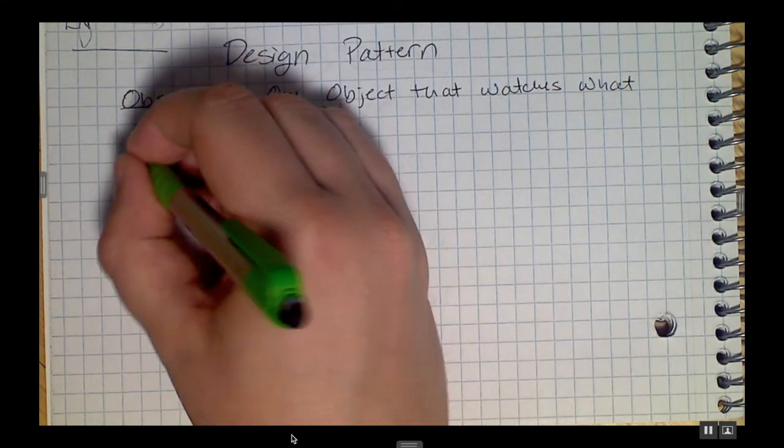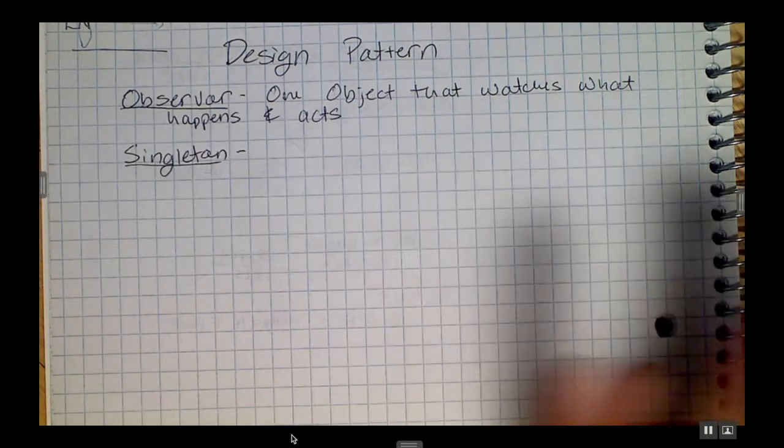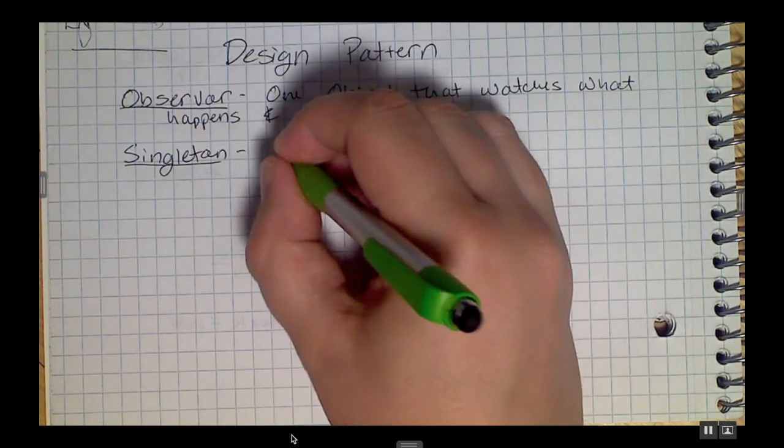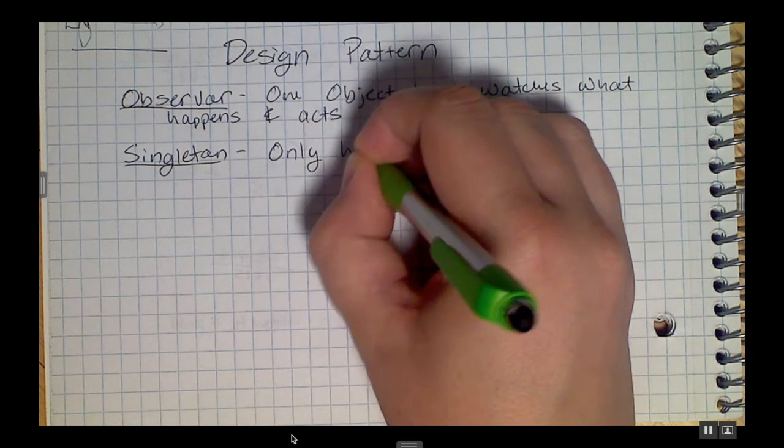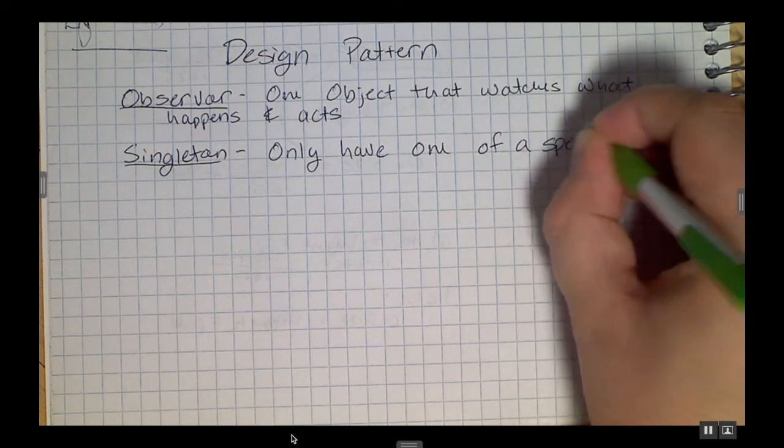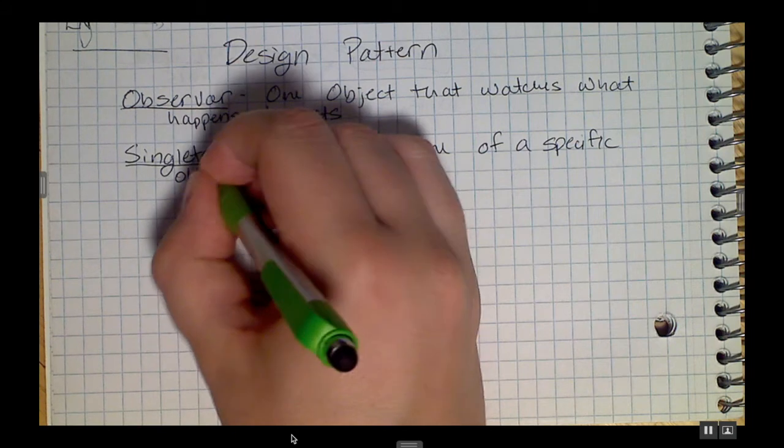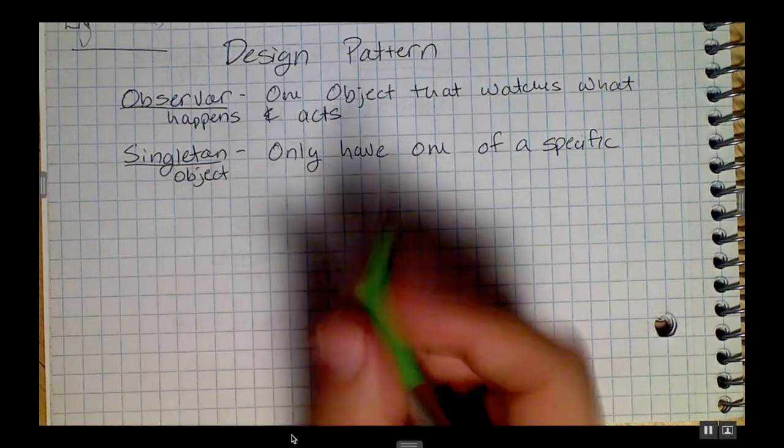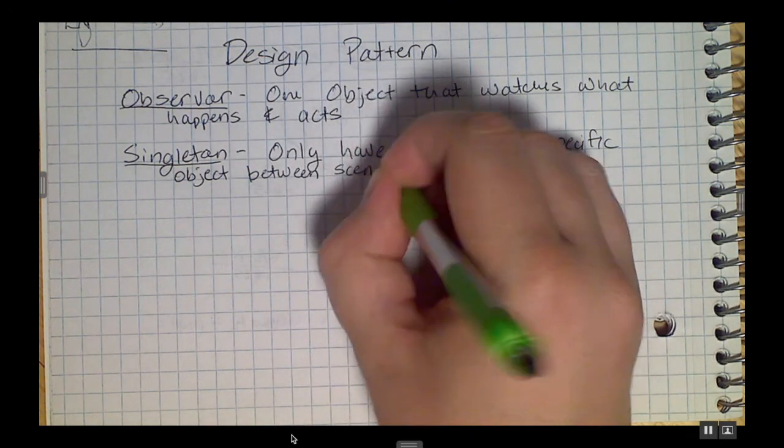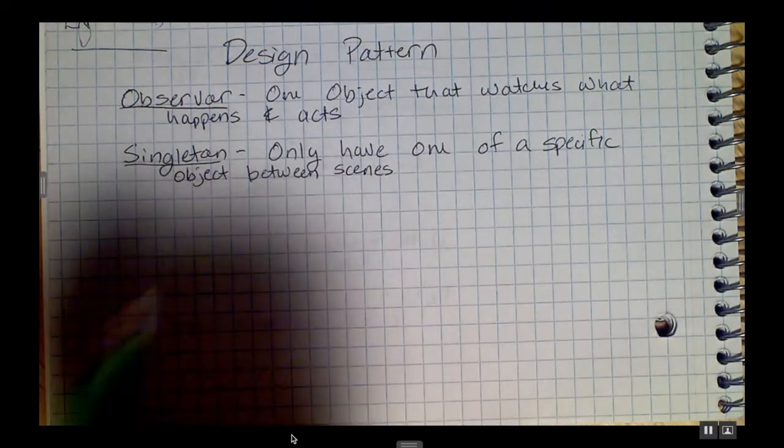The observer pattern goes kind of hand-in-hand with another one that's used a lot in Unity, and that's called the singleton pattern. The word singleton means just one, and you would use a singleton pattern if you know for a fact that you're only ever going to have one of any one specific object. This gets used a lot with things like game managers, health managers, inventory - things that you want to persist between scenes.